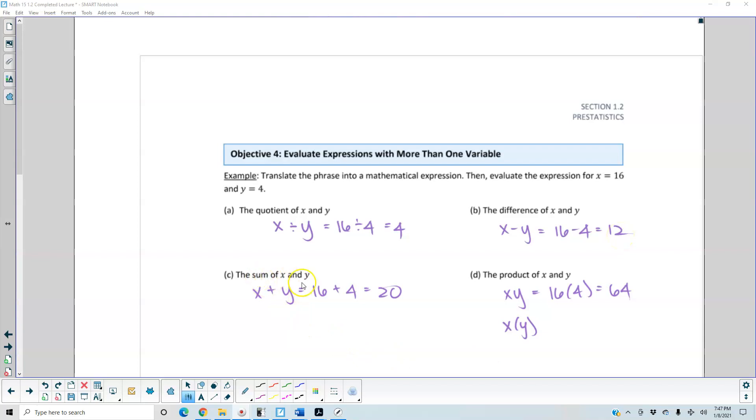The sum of x and y. x plus y is equal to 16 plus 4, which is equal to 20. And the product of x and y is xy, or x times y, which is equal to 16 times 4, which is equal to 64.